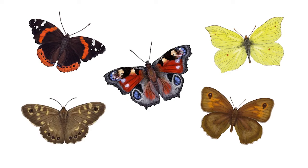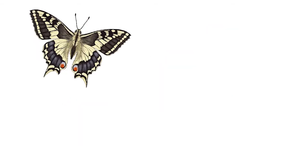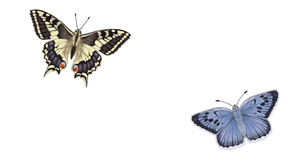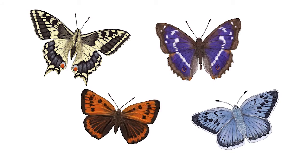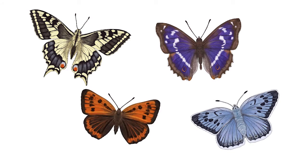Others are much rarer and more difficult to find, and some no longer live in the Cambridge area. These are the swallowtail, the large blue, the purple emperor, and the large copper. I'm going to show you how I would draw a peacock butterfly, and then you're going to apply the same techniques to the butterflies that you've been given to draw.